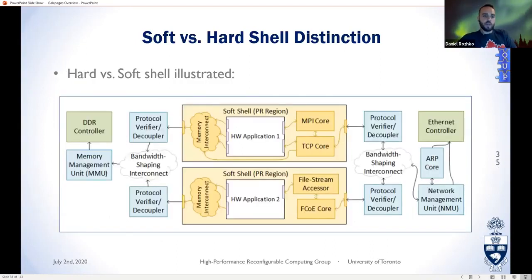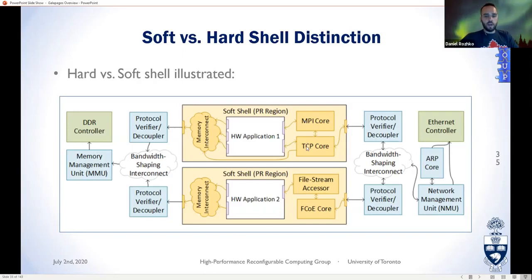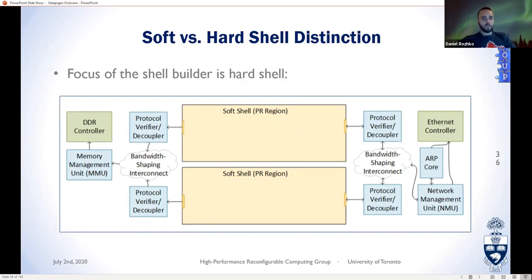In the static region you have the controllers and isolating hardware. Inside the PR region there is a layer of shell with abstractions such as MPI, TCP, and file access, depending on what you need. When we talk about the shell builder, we're talking about building the hard shells — the static regions — for all these different situations.